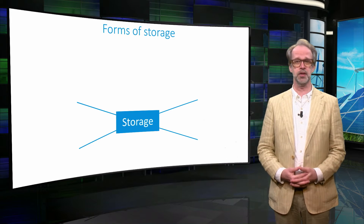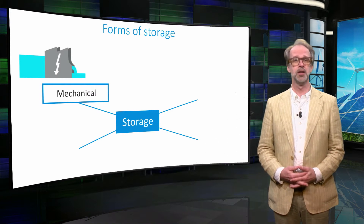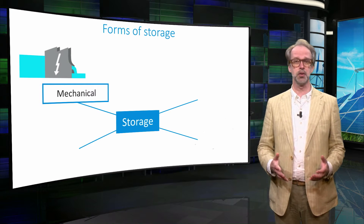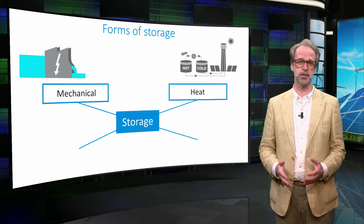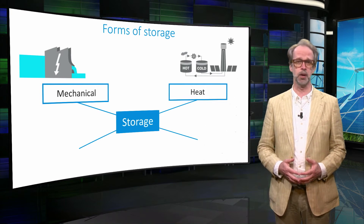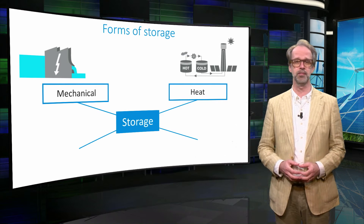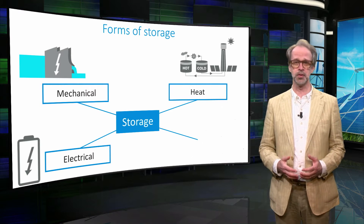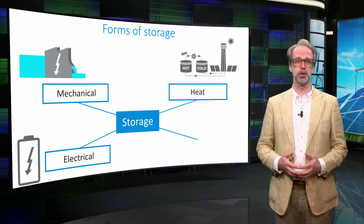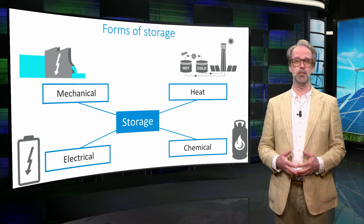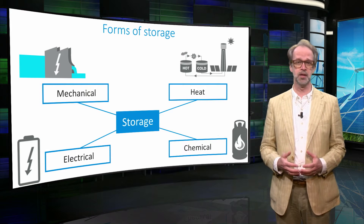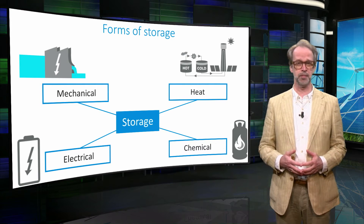The first is mechanical energy storage, such as hydropower stations. It is also possible to store energy in heat, for instance by melting salt reservoirs. Well known is of course electrical storage in batteries. Finally, it is also possible to store energy in chemical bonds, for instance by creating hydrogen by electrolysis of water.